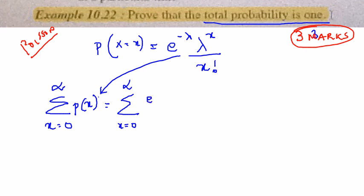Now I am going to expand this formula and write for 0 to infinity. So it is going to be e^(-λ) λ^0 by 0 factorial plus e^(-λ) λ^1.